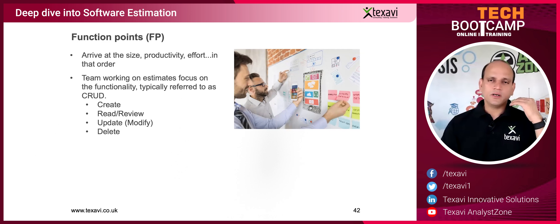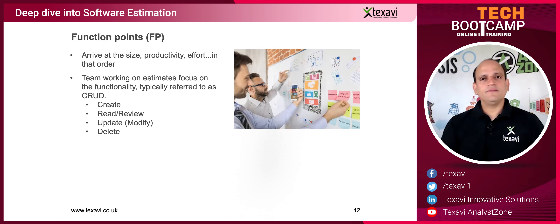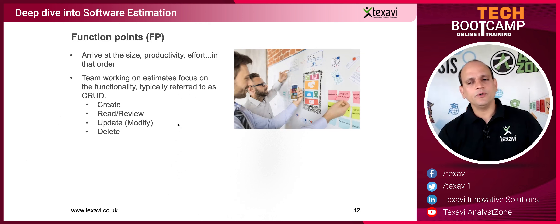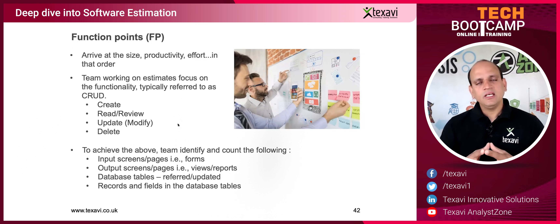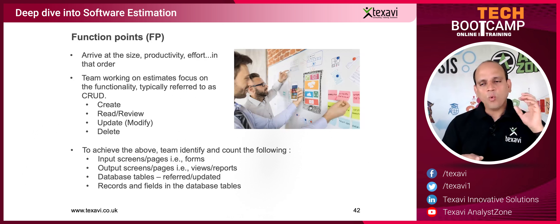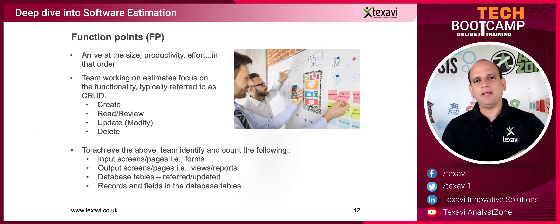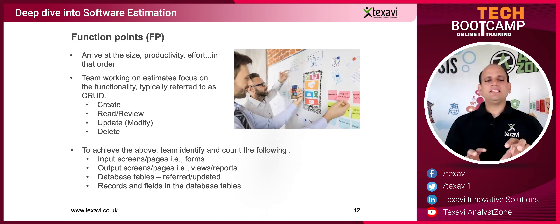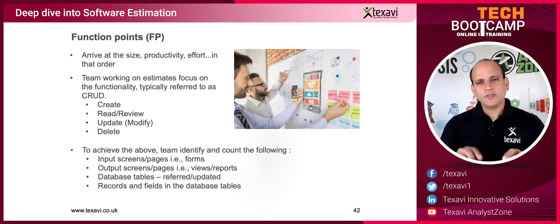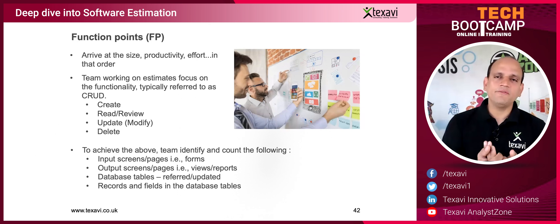That's another business rule. You're creating a user, updating user details like address or billing information, and you can delete a user if they no longer want an account. You identify all these rules and create CRUD operations for all the entities. With Function Points, you analyze the input screens — like the form views, login, and registration pages where users enter data.